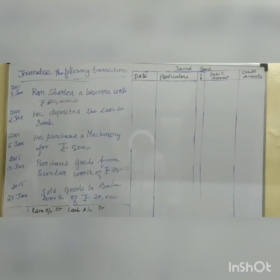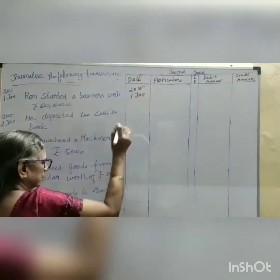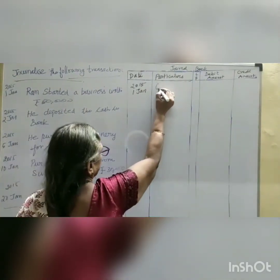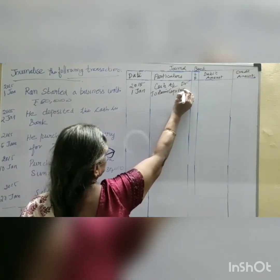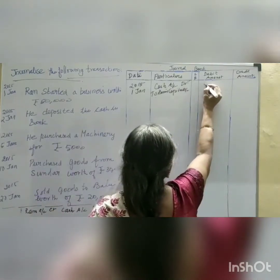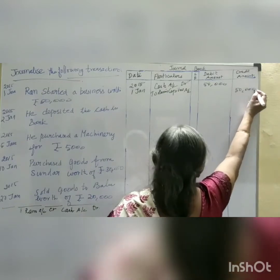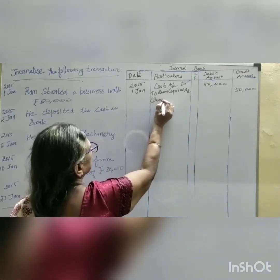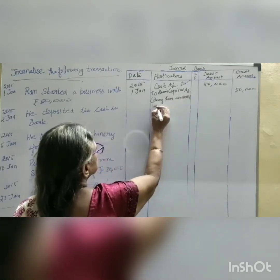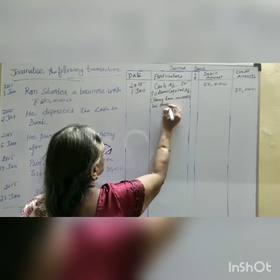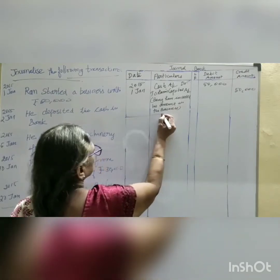Now let us write the transaction. Cash account should be written on top. The date is 2015, 1st January. Cash account is debited to Rahm's capital account — cash account debited with 50,000, and Rahm's capital account credited with 50,000. Narration: Being Rahm invested his amount in the business.